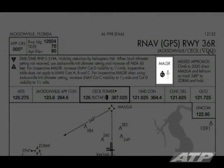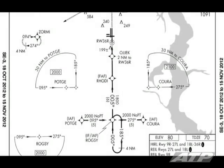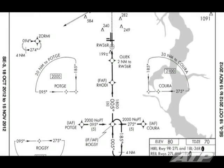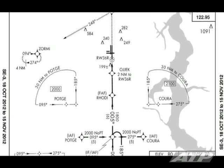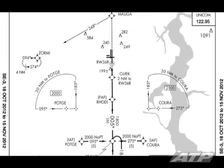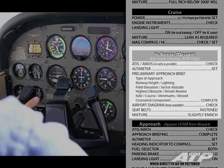12,500 feet of runway. Medium intensity approach lighting system. Field elevation of 80 feet. Sector altitude of 2,100 feet within 30 nautical miles of CORA. Highest obstacle at 200 feet just prior to the missed approach point.